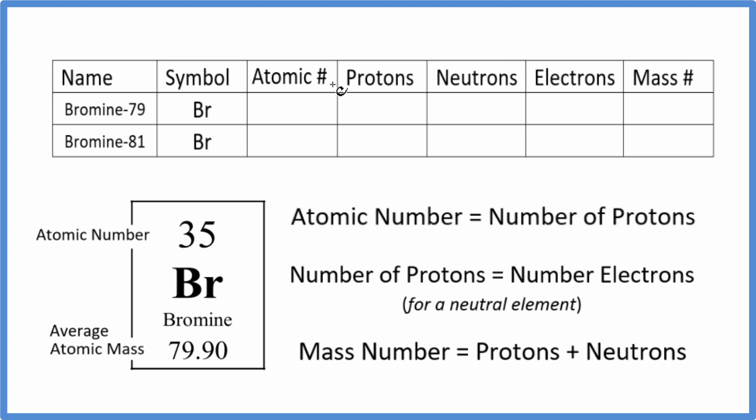Let's start by looking at the atomic number for bromine. This number on the periodic table is the atomic number. Bromine has an atomic number of 35, which is the identity of bromine.